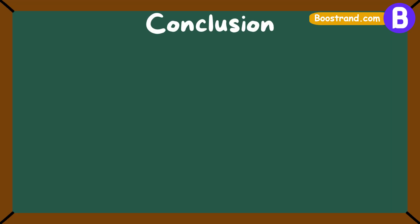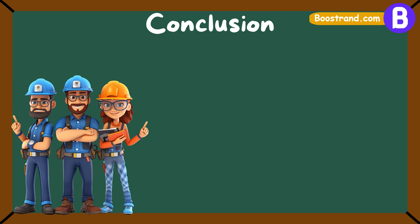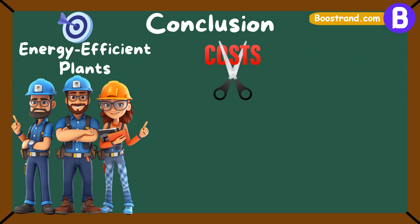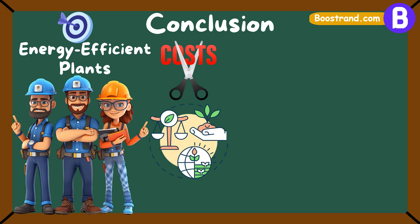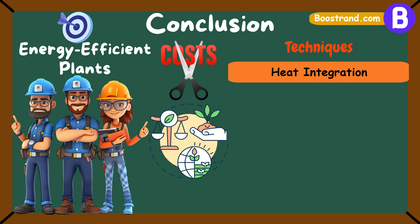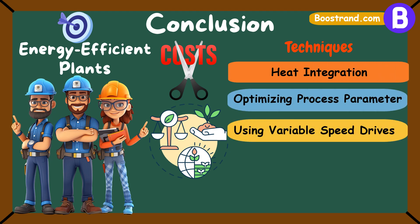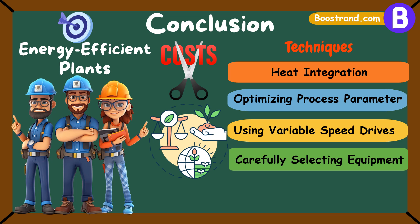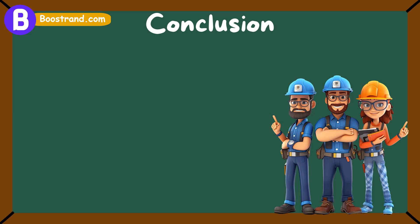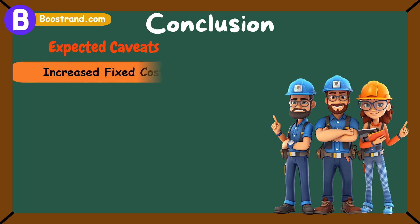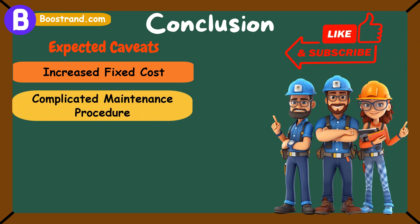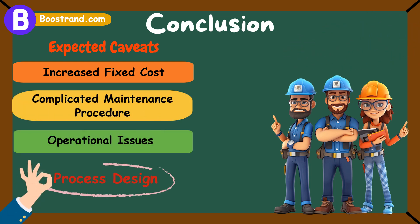In conclusion, process engineers play a vital role in ensuring that plants are designed to be energy efficient, thereby reducing operating costs and minimizing environmental impacts. By employing techniques such as pinch technology for heat integration, optimizing process parameters, using variable speed drives, and carefully selecting equipment, significant energy savings can be achieved and the plant operating cost can be reduced, leading to greater profit on the long run. However, a process engineer should also consider the expected caveats when using these techniques, such as increased fixed cost, complicated maintenance procedures, or operational issues, in order to deliver a proper process design.